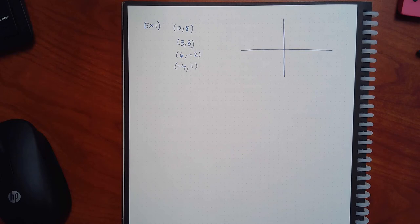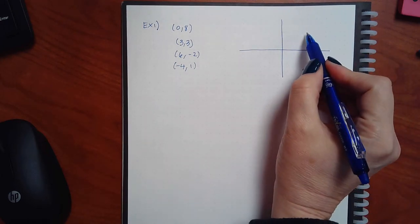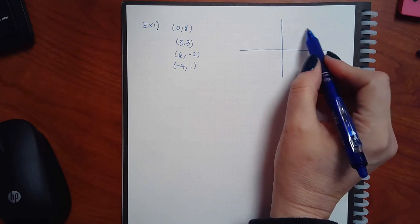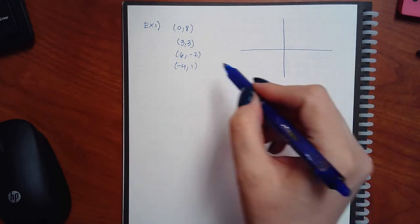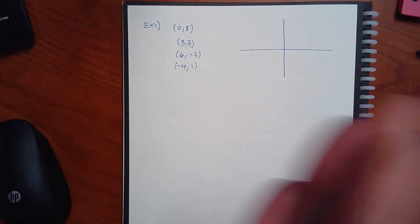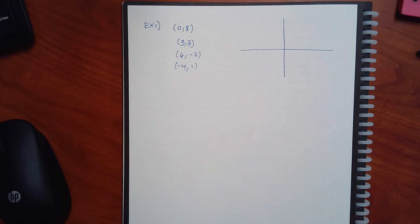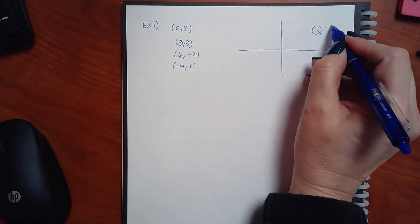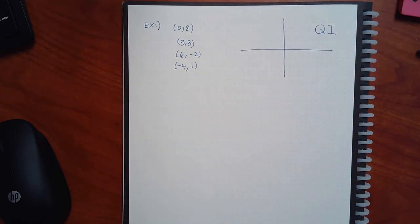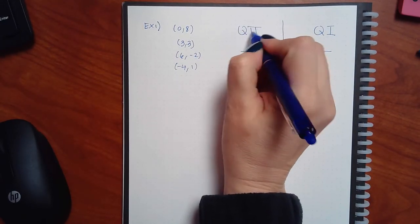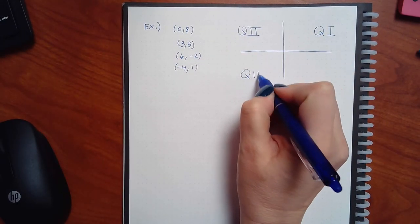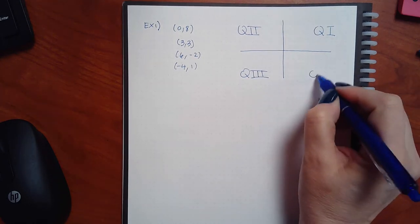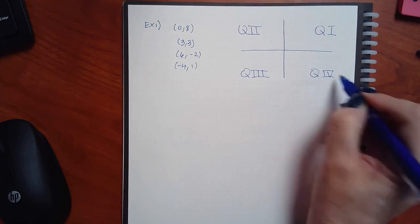For the rectangular system, the things you need to know: by drawing those little lines I've created four sections. Those four sections are called the four quadrants. The one on the top right is quadrant one, and then it goes counterclockwise. So this one would be quadrant two, down here would be quadrant three, and over here would be quadrant four.